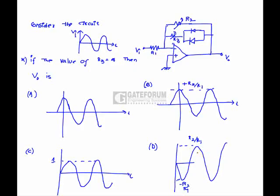If the value of R3 equals infinite, then V naught is? If R3 is infinite, this combination is not going to exist. It is simply an inverting amplifier whose gain is minus R2 by R1. So the output is 180 degrees phase shifted compared to the input, and the gain is R2 by R1, so option B is correct.